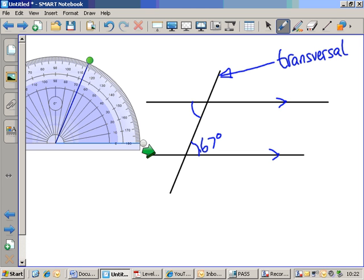It's an alternate angle to the 67 that we've got down at the bottom. It's alternate because it's on the other side of the transversal. The lower angle is on the right of the transversal. The higher one is on the left of the transversal. And it's also an alternate angle because the lower angle is above the lower parallel line and the higher angle is below the higher parallel line. So it's kind of in the opposite position to the lower angle. And so we call it an alternate angle.